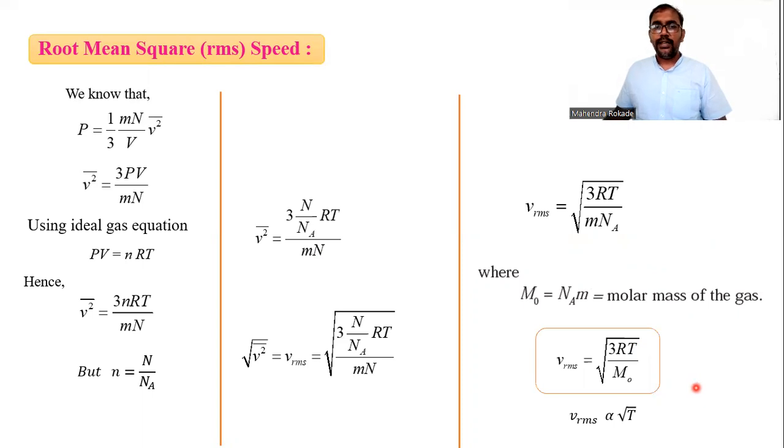But remember one thing: when a problem is asked where two gases are mentioned, this relation is not entirely true. When two gases are being considered, RMS speed depends on T and m0. So we can write v-RMS is also proportional to square root of T divided by m0.